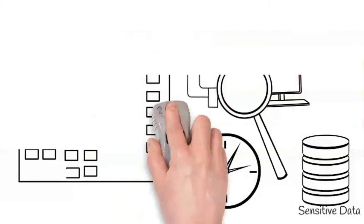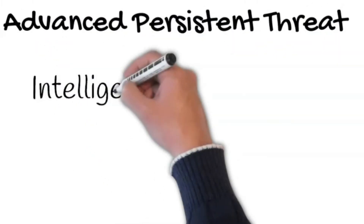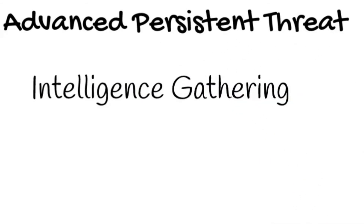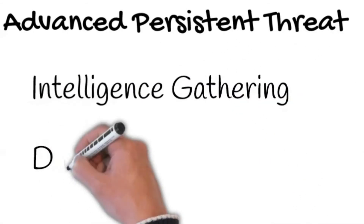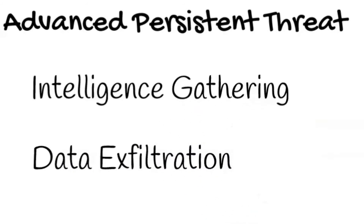APT attacks are only interested in two things. First, intelligence gathering — illegal mining of information from a network. Second, data exfiltration — unauthorized data transmission to external locations, where it is controlled, encrypted, and under the attacker's control.